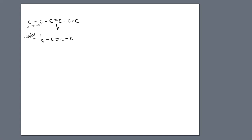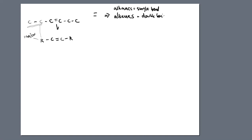When we have double bonds in organic chemistry, these molecules are called alkenes. Alkanes — A-L-K-A-N-E-S — are single-bonded molecules, while alkenes are double-bonded molecules. We're talking about alkenes here because we're looking at the double bonds present in fats and oils. So what does hydrogenation mean?